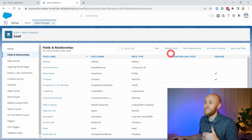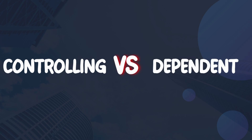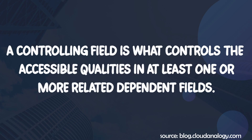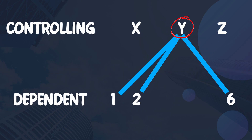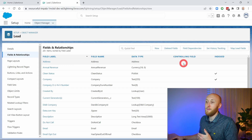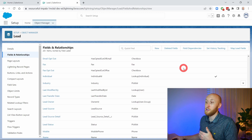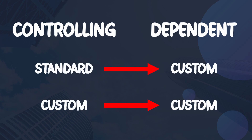As you have the object manager open, you can actually see if any fields are controlling fields. Controlling fields are what allows you to select the dependent field. Think of the controlling field as the first layer of data and the dependent field as the second layer. So if you choose Y, you have certain dependent values that you can select from. A standard field cannot be a dependent field — they can be controlling fields, and a custom field can also be a controlling field to a custom field that is the dependent field.